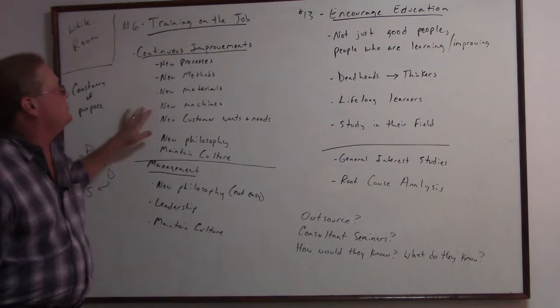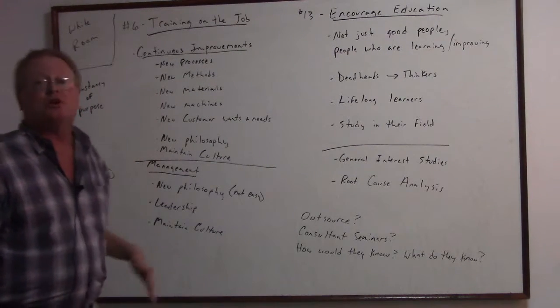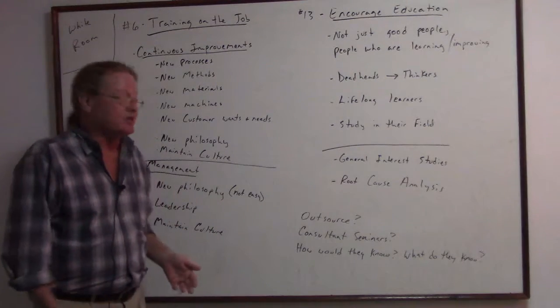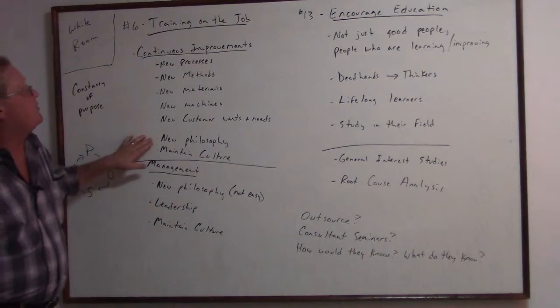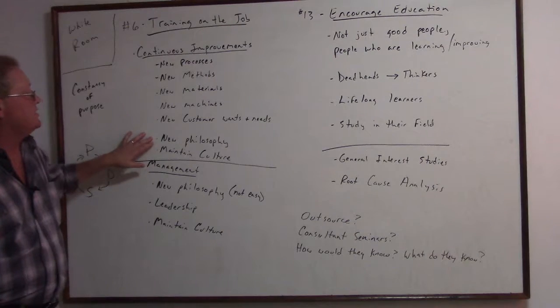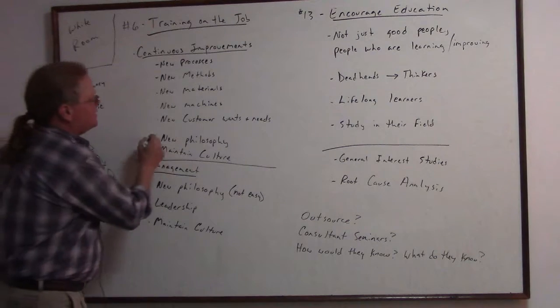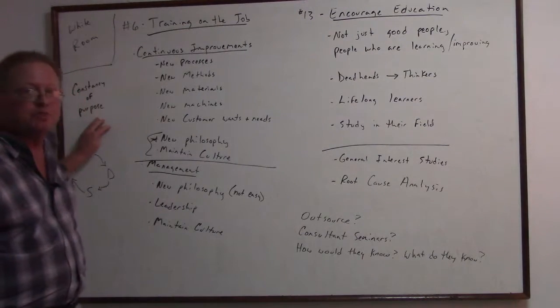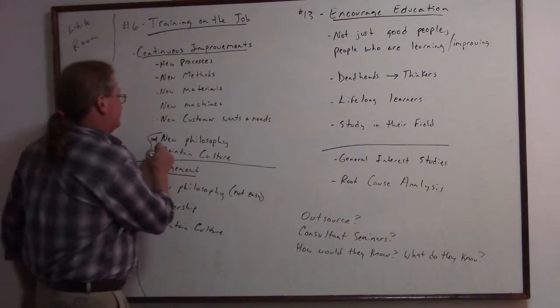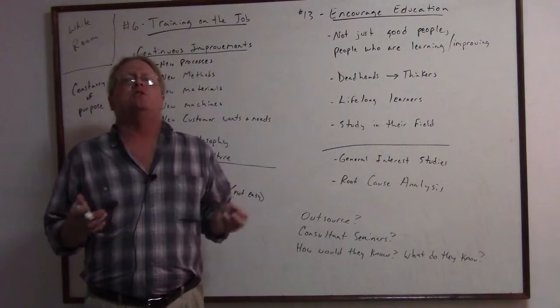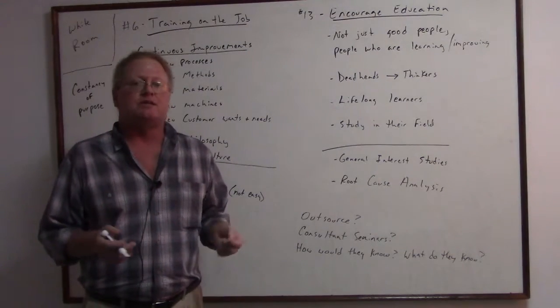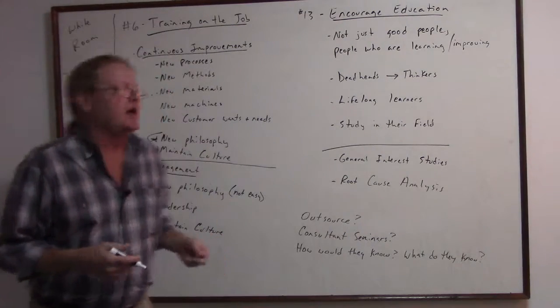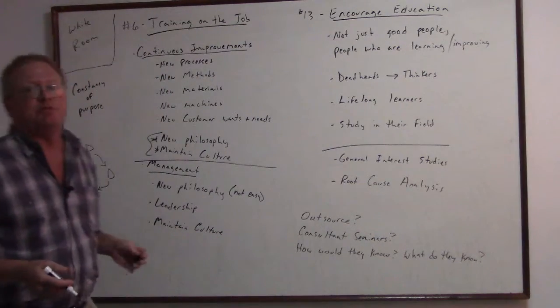Our continuous improvements could include new processes, new ways of doing things, new materials, new machines, new customer wants and needs that we need to address and figure out a way to deliver. And probably one of the big ones is the new philosophy, which goes to constancy of purpose and maintaining the culture.